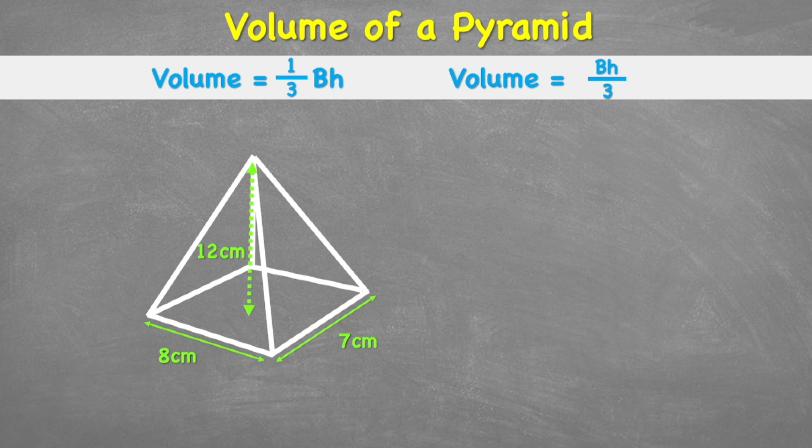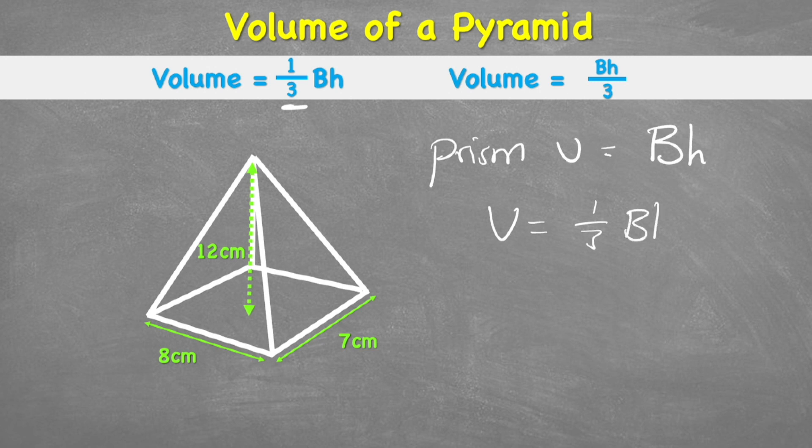Okay, so to find the volume of a pyramid, we're going to use the same formula as any prism, but we're going to put this one third in front of it. So the volume of any prism equals the area of the base, shown by this capital B, times the height. And specifically for a pyramid, we're going to put one third in front of it. So the volume equals one third of the area of the base times the height.